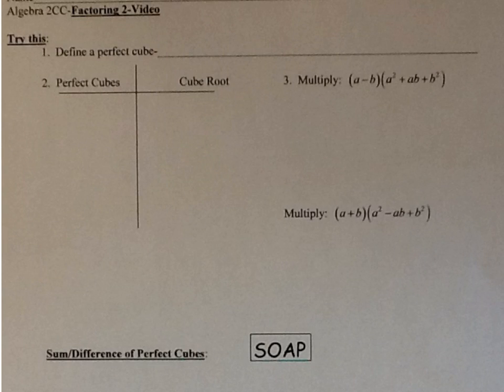Today we're going to learn about factoring the sum and difference of perfect cubes. First, you have to know what a perfect cube is. Remember, a perfect square comes from a number multiplied by itself — like 4 is a perfect square because 2 times 2 is 4, and 9 is a perfect square because 3 times 3 is 9. A perfect square comes from a number multiplied by itself — square meaning 2.